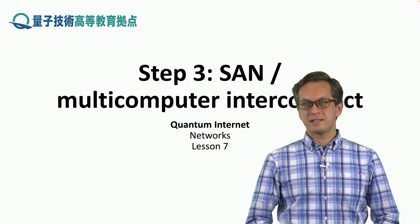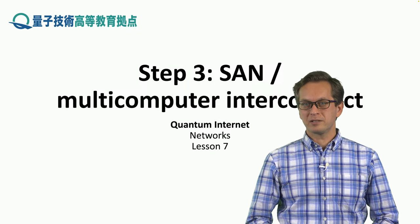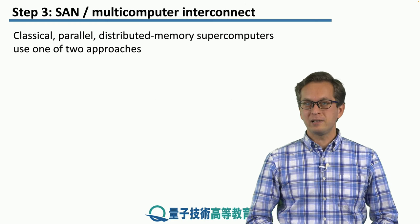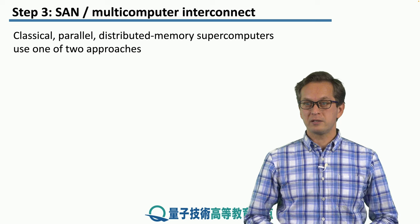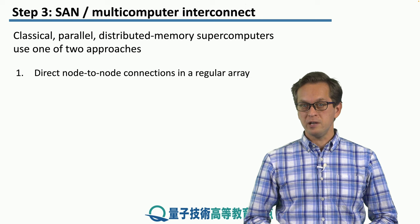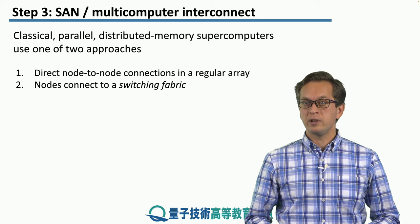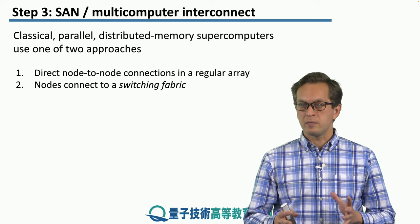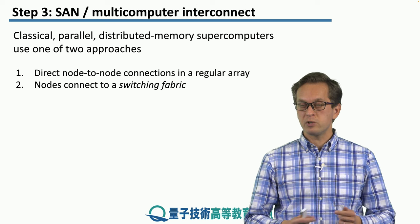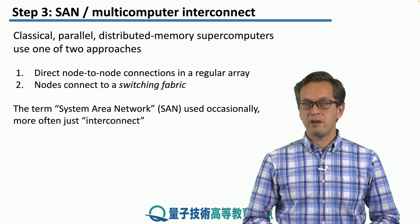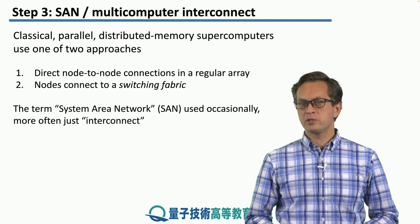Step 3: SANs, or system area networks, also called multi-computer interconnects. Classical parallel distributed memory supercomputers use one of the following two approaches to connect their subsystems: either direct node-to-node connections in a regular array, or nodes connected to a switching fabric — an arrangement of switches that allows nodes to change who is talking to whom. The term system area network is used occasionally; more often we just talk about an interconnect.